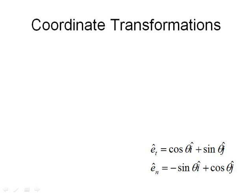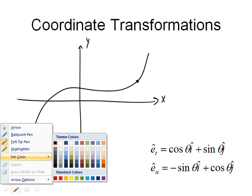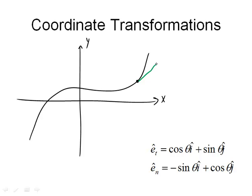Let's take a look at how we might make a transformation from one coordinate system to another. Assume we have an X and Y axis and a particle moving on a curve in the XY coordinate system at a given location. The tangential unit vector is tangent to the curve, and the normal unit vector is perpendicular and towards the inside of the curve.